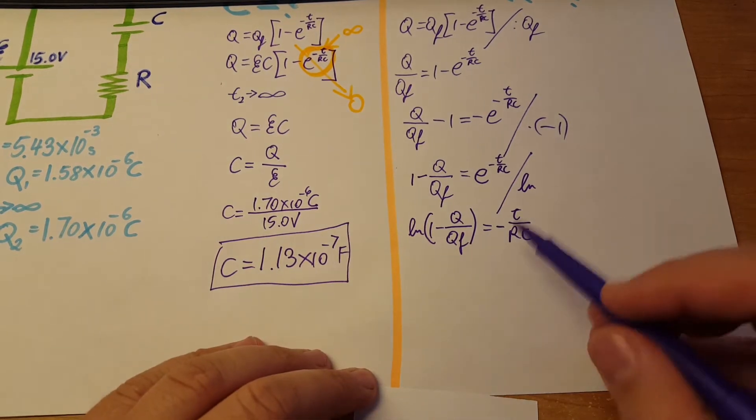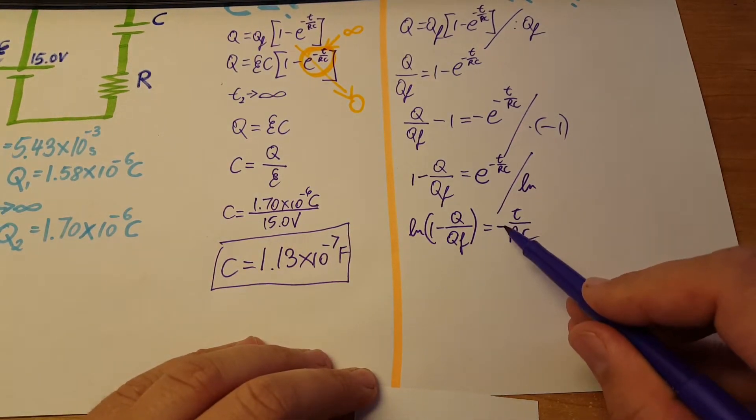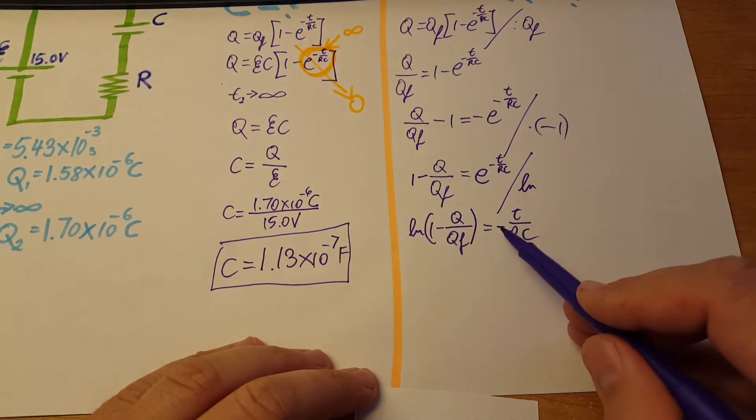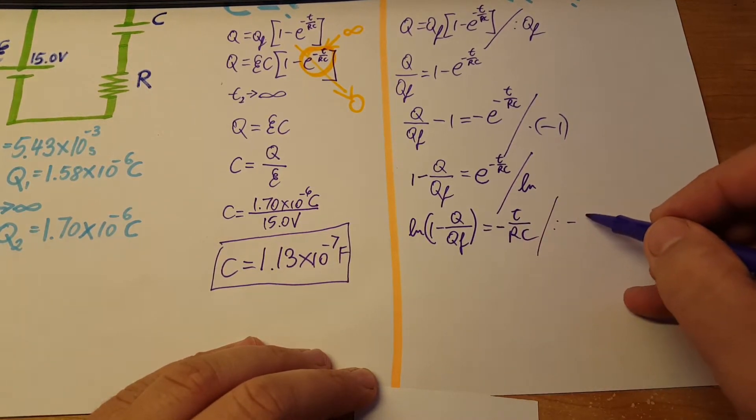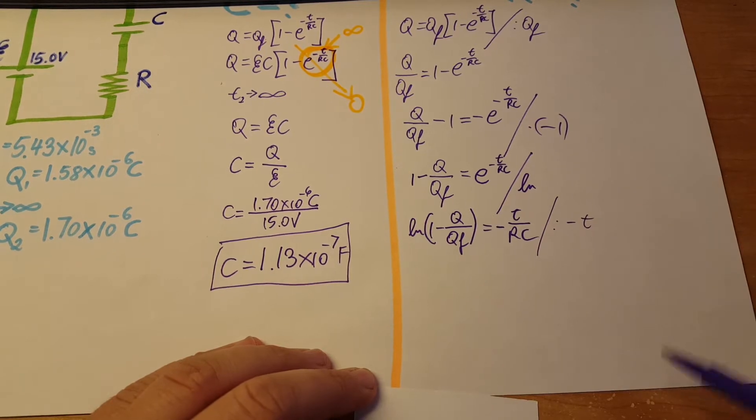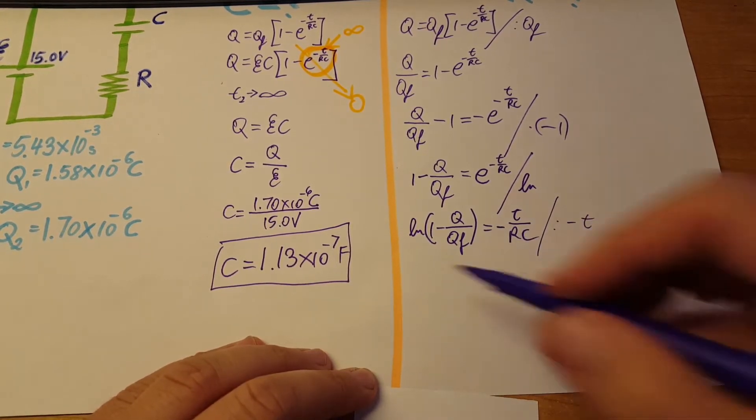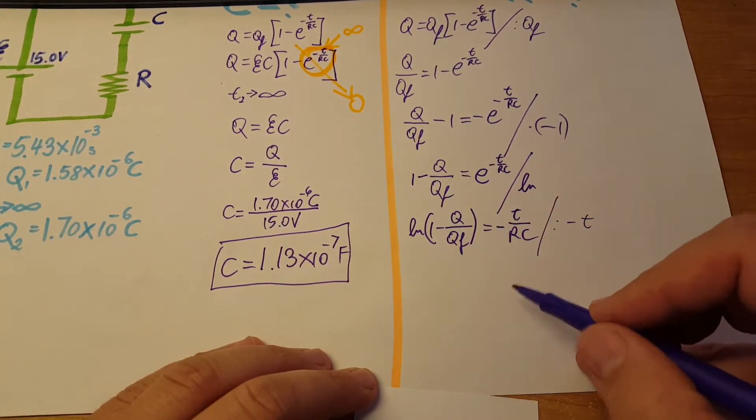Now we're gonna divide the whole thing by negative t. This way it's gonna disappear from here and come over here.